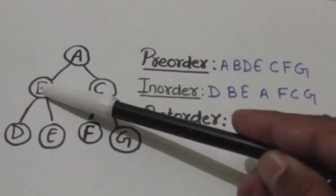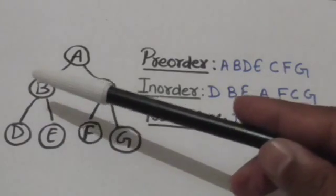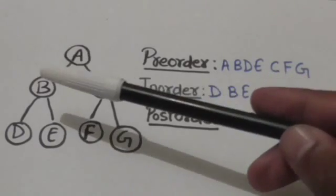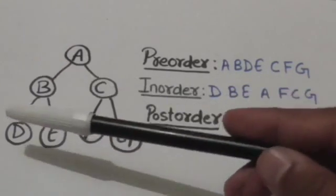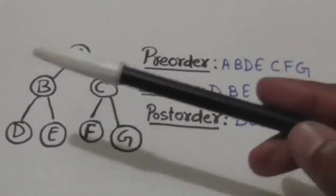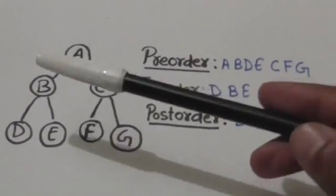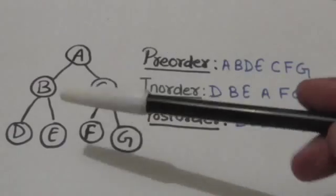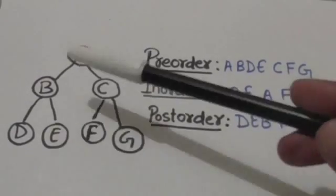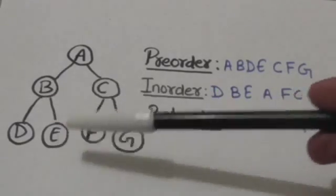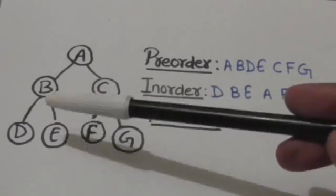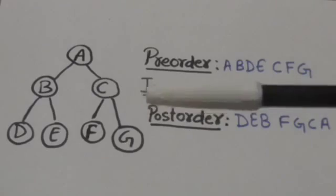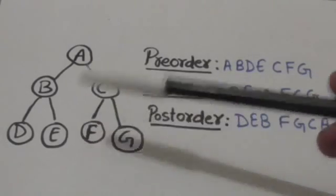B is the root of the left subtree of node A, so first we will traverse the left subtree of node B in in-order. Left subtree of node B has only one node, that is node D, so D will be processed. After that, node B will be processed, and then the right subtree of node B will be traversed in in-order. Right subtree of node B has only one node, that is node E, so node E will be processed.